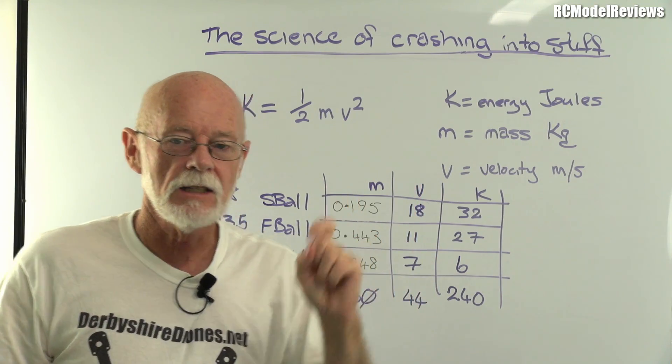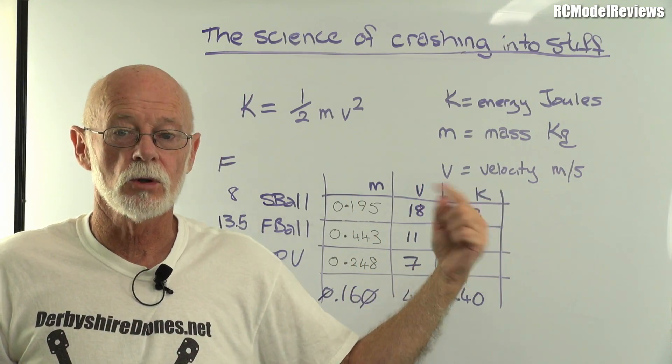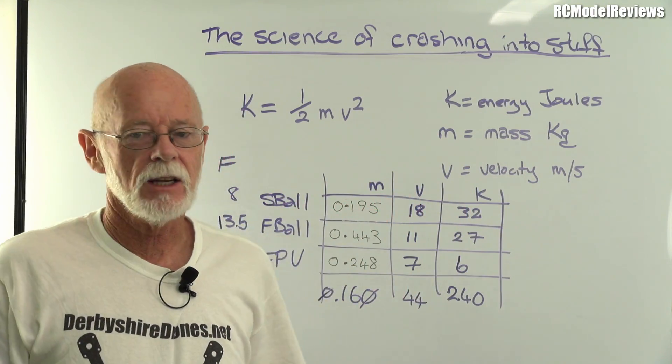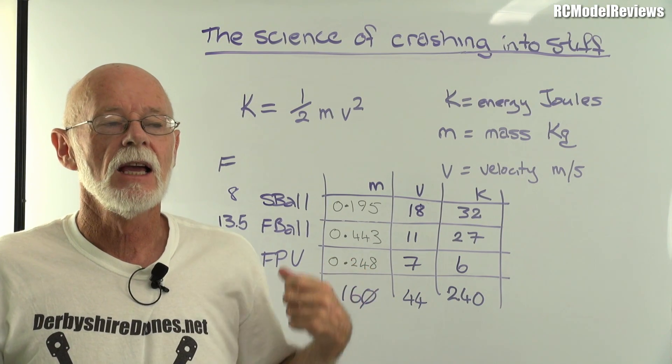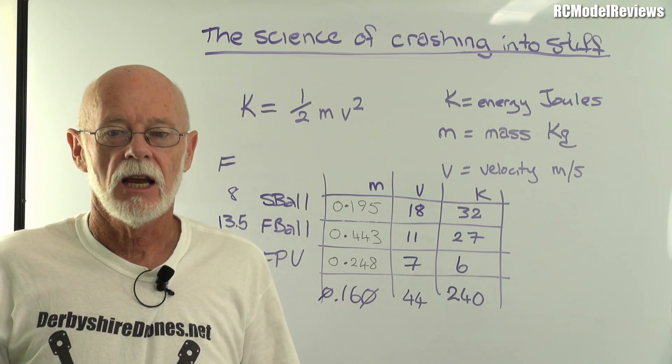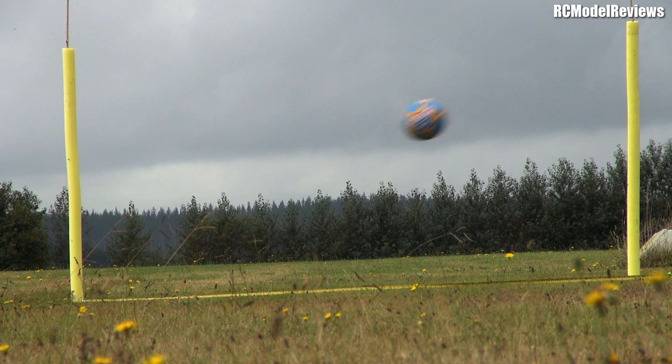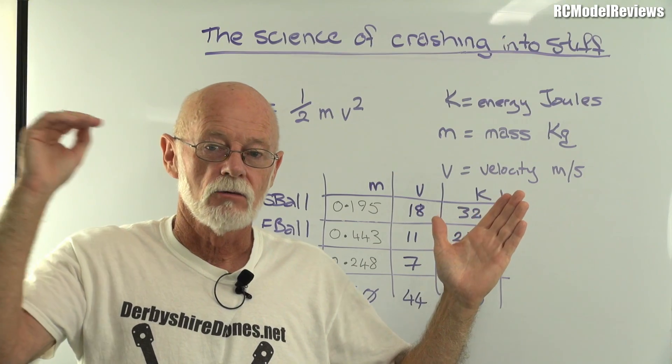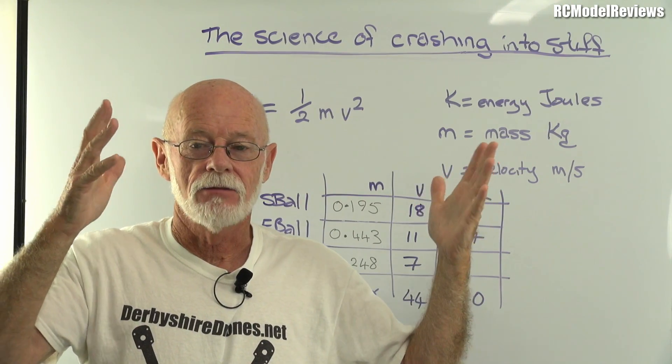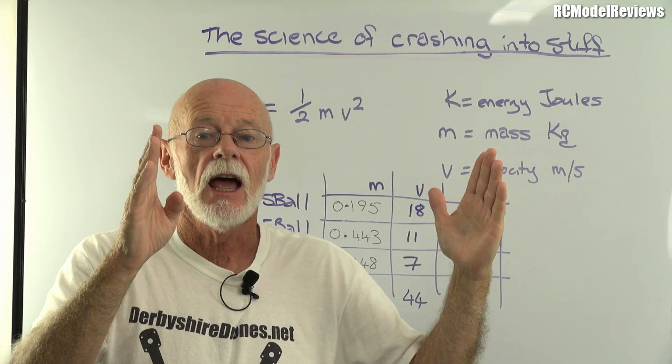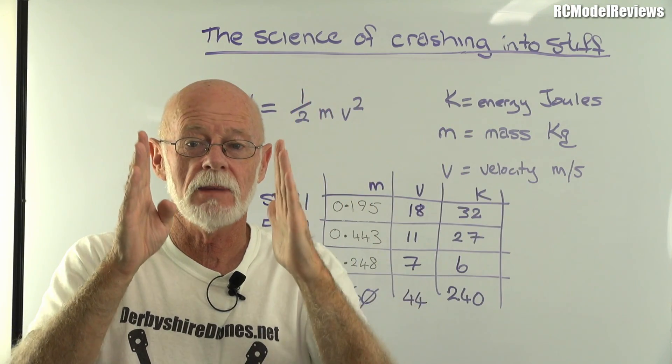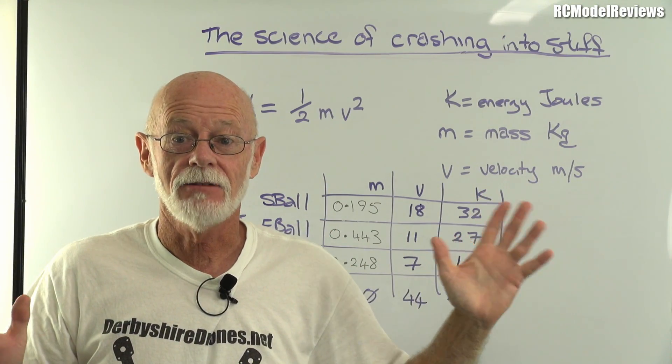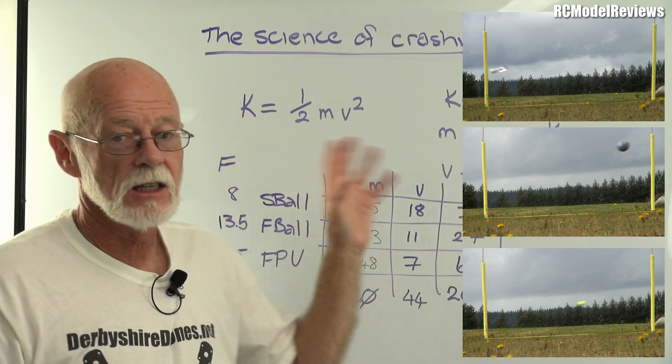All I need to do now is measure the time it takes for the two balls and the FPV model to travel between the poles. I've got a camera, so I set my camera to 50 frames a second. What that means is that every 20 milliseconds, every 20 thousandths of a second, the camera takes another picture. I can then count the number of frames between when the object reaches one pole and when it reaches the other pole, and from the number of frames I can calculate the number of milliseconds and from that I can calculate the meters per second.